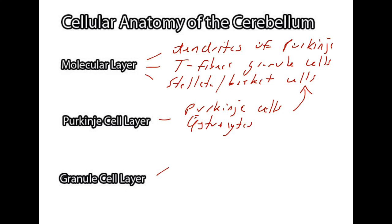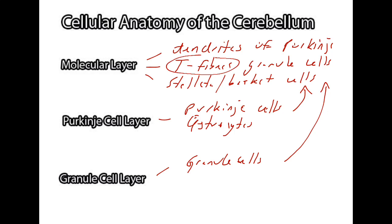The deepest layer of the cerebellum is known as the granular cell layer. There are granule cells in this layer, and they send their axons up into the molecular layer as T-fibers, as we alluded to earlier. In addition, there are Golgi type 2 neurons, also specialized neurons present in the granular cell layer.